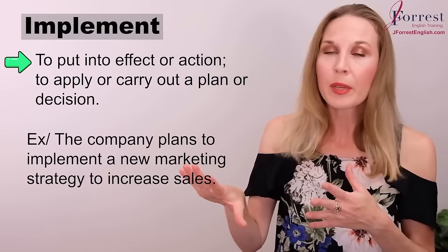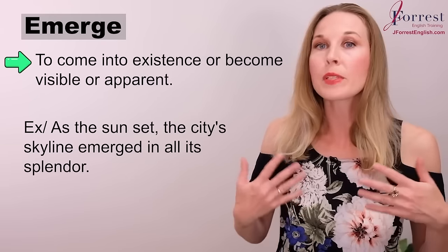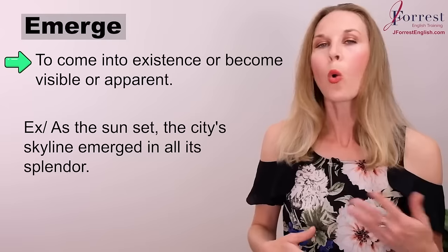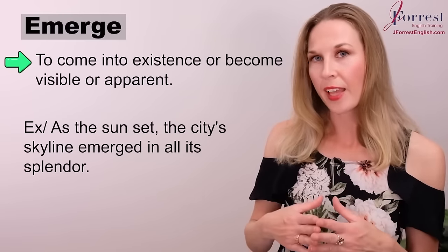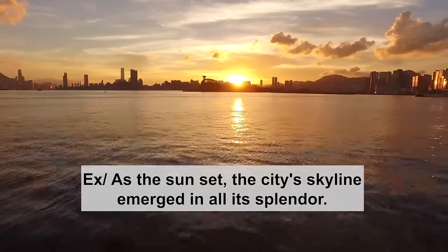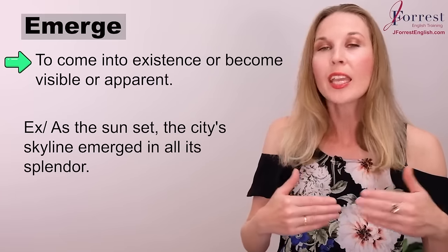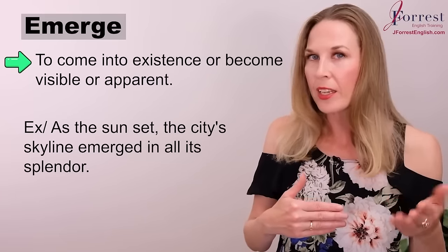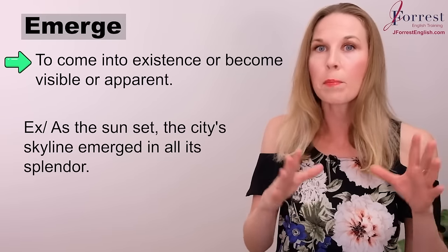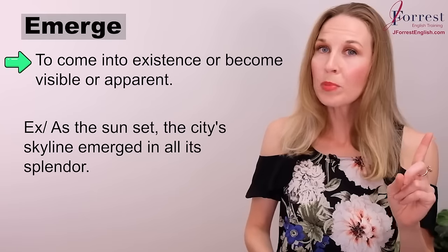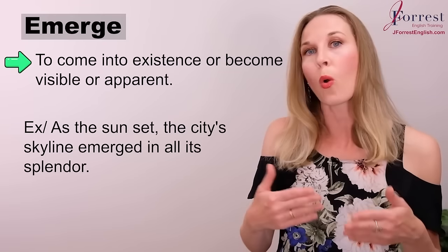To emerge. This is when something comes into existence or becomes visible or apparent. For example: as the sun set, the city skyline emerged in all its splendor. The city skyline emerged — it became visible or apparent. Apparent is another way of saying visible. A problem can also emerge, which means that problem is visible or apparent.